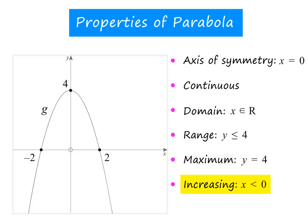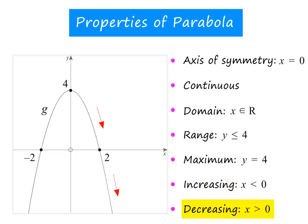The parabola is increasing in the interval x less than 0, because the graph is sloping up to the left of the turning point. And it is decreasing in the interval x greater than 0, because the graph is sloping down to the right of the turning point. These are all the properties you need to know for this parabola.